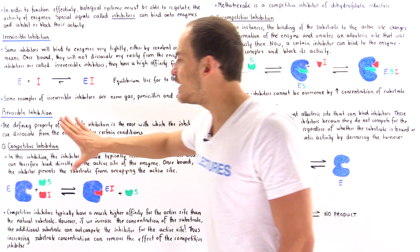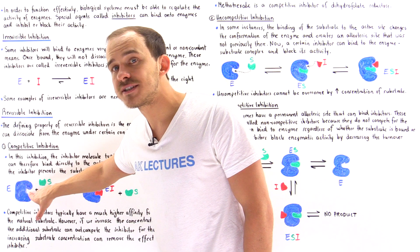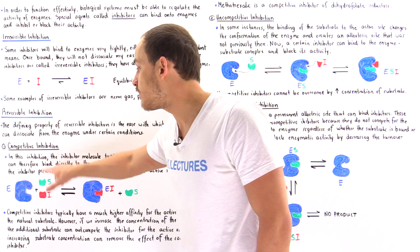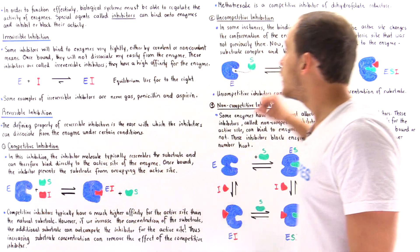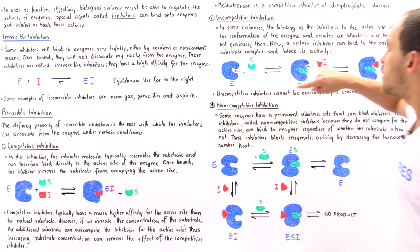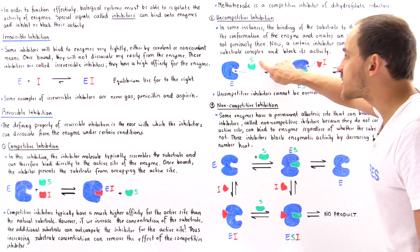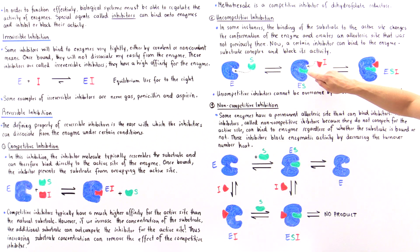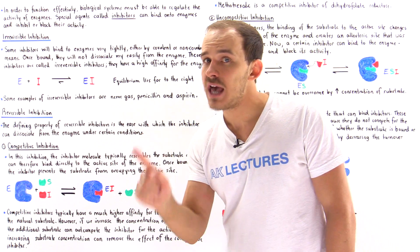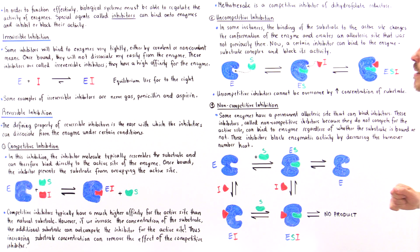In competitive inhibition, the inhibitor binds onto the active site of that enzyme because of the resemblance in structure. In uncompetitive inhibition, the only time the inhibitor can bind onto that enzyme is when the substrate is actually bound onto the active site, because only then will we create that pocket of space — the allosteric site — that the inhibitor can actually bind to.